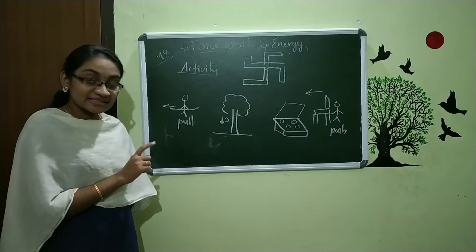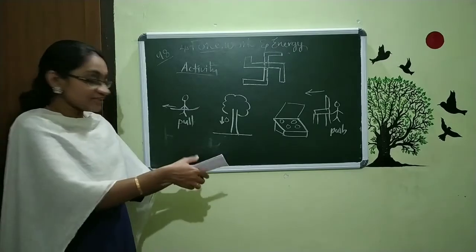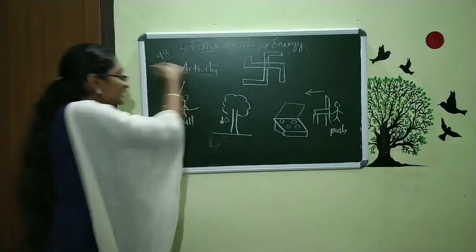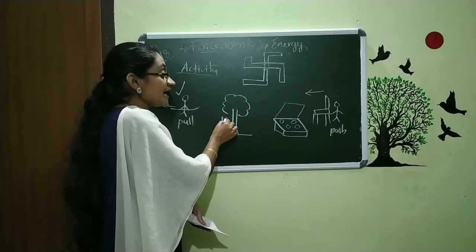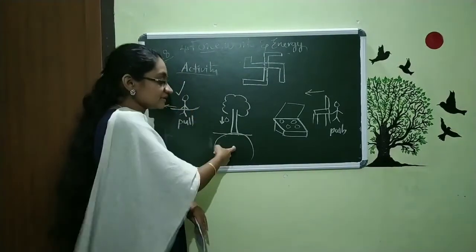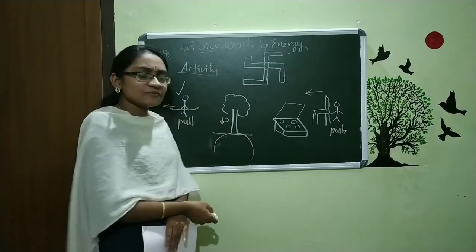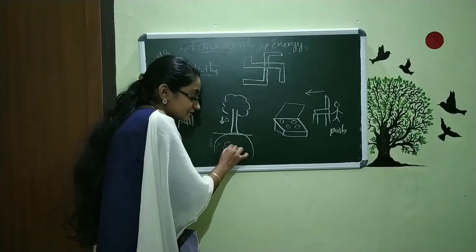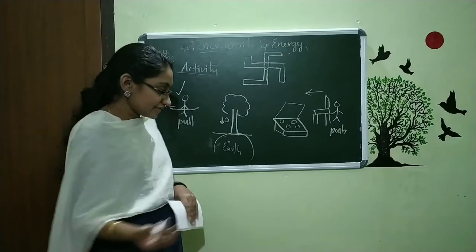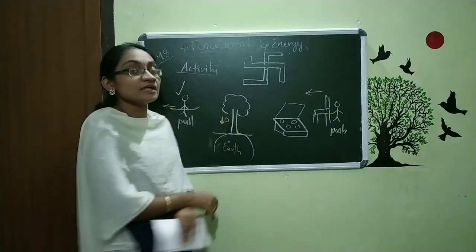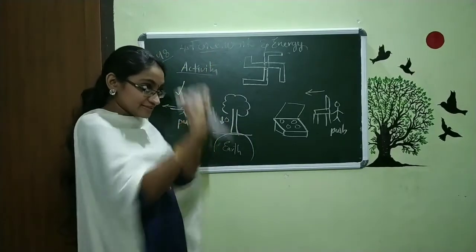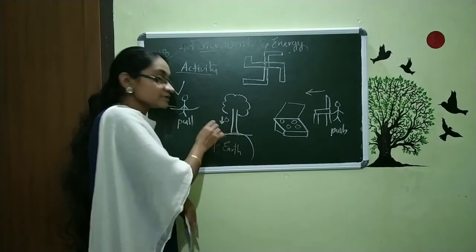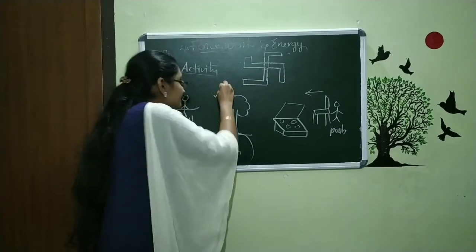Now we want to check which are the cases that act force. The first case: one person is pulling the rope, so this person is giving a force on the rope — we can give a tick for the first one. The second one: the apple is coming downwards to the earth. A particular force is acting on this apple — the gravitational force given by the earth. Because of that force this apple is coming down. So we give a tick for the second picture also.